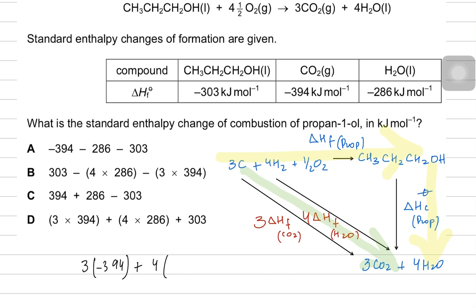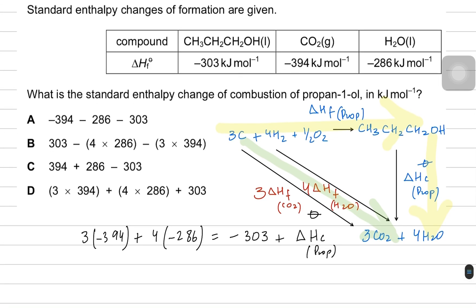Your equation becomes: 3 times the formation of carbon dioxide (minus 394) plus 4 times the formation of water (minus 286) equals formation of propanol (minus 303) plus combustion of propanol. To find combustion of propanol you rearrange: it equals 3×(−394) + 4×(−286) minus (−303), so the 303 becomes positive. The answer is 3×(−394) + 4×(−286) + 303.